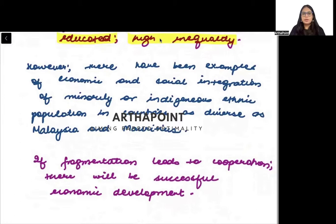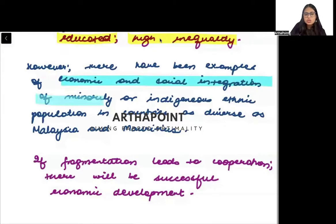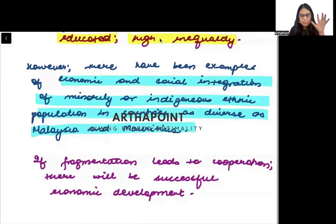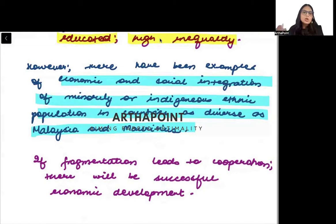However, there have been examples of economic and social integration of indigenous and ethnic populations in countries as diverse as Malaysia and Mauritius. So just because a country has a lot of fractionalization does not mean development cannot happen. There have been countries with diverse religions and backgrounds that have still performed well. It is not a rule that diverse countries will not perform well.